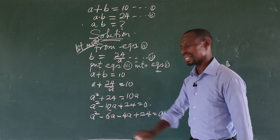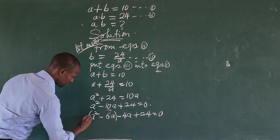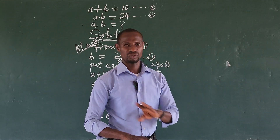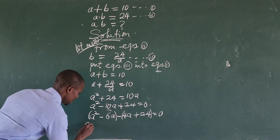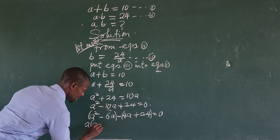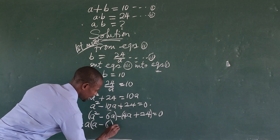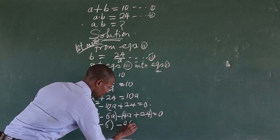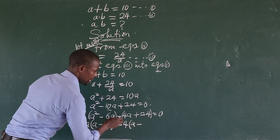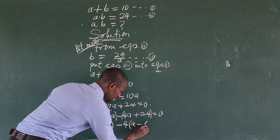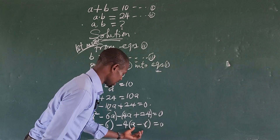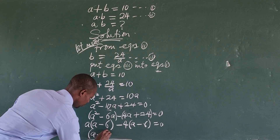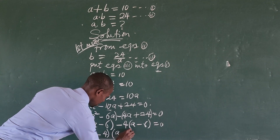We now bracket and group terms. We notice that minus 6a minus 4a gives us minus 10a. We bracket the first two terms and the last two terms. Taking common factors: a is common in the first bracket giving a(a minus 6), and 4 is common in the second bracket giving 4(a minus 6). Since (a minus 6) is common to both, we factor it out, giving us (a minus 4)(a minus 6) equals zero.